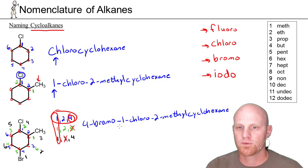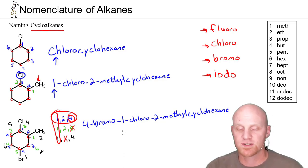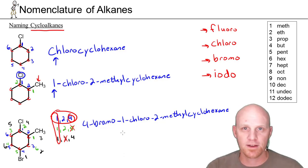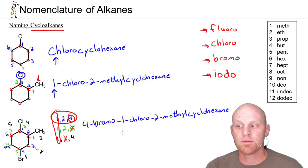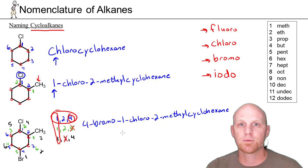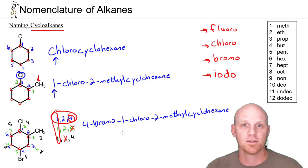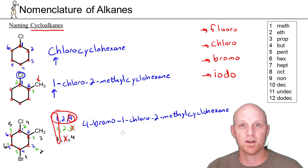We've named three different cyclohexanes specifically. The same process works for cyclopentane, cyclobutane, cycloheptane, and so on — always named as the parent chain. Now let's do one example where the ring is not the parent chain, but is instead a substituent.